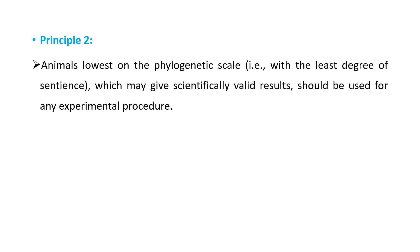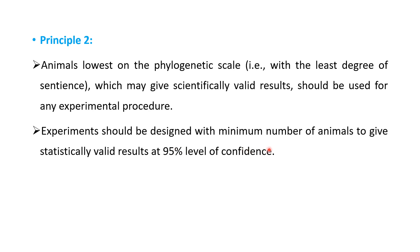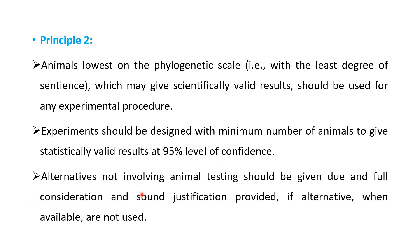Principle two: Animals lowest in the phylogenetic scale, i.e., with the least degree of sentience — sentience meaning the capacity to feel pain — which may give scientifically valid results should be used. Experiments should be designed with a minimum number of animals to give statistically valid results at the 95% level of confidence. Alternatives not involving animal testing should be given full consideration, and sound justification must be provided if an available alternative is not used.